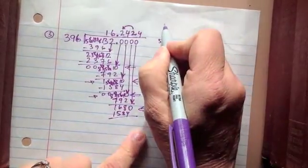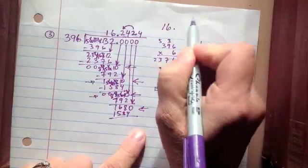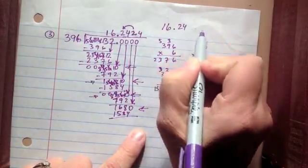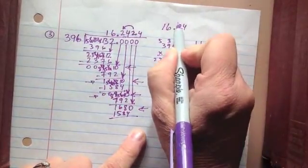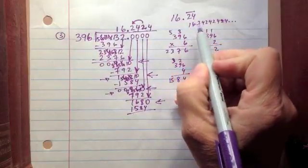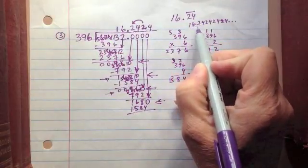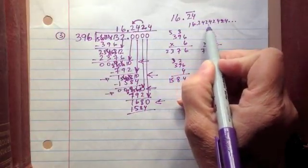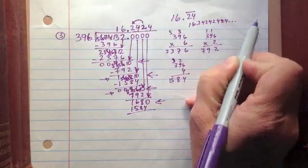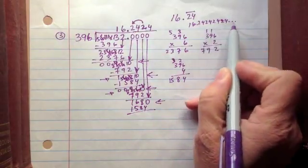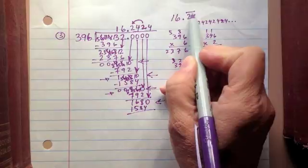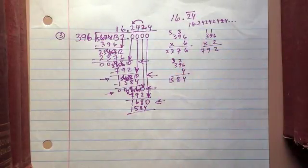So, what we need to do is we need to write our answer as 16 and 24 one hundredths, but we put a line over the top. What it means is that the number really is 16.24242424, etc. But instead of writing all of that, we can just write 2, 4 with a line over the part that keeps repeating.